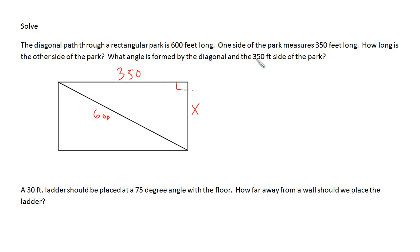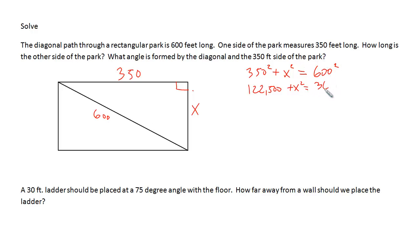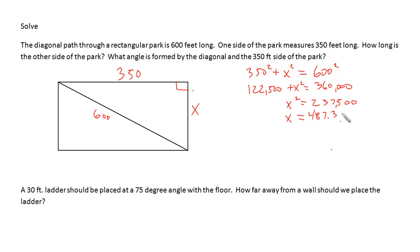Using the Pythagorean theorem: 350² + X² = 600², so 122,500 + X² = 360,000. Subtracting and taking the square root gives X ≈ 487.3 feet. That's the simple Pythagorean theorem portion.